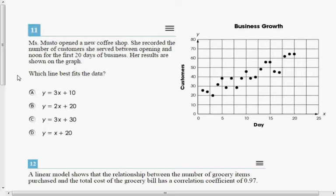Okay, number 11 says Ms. Musto opened a new coffee shop. She recorded the number of customers she served between opening and noon for the first 20 days of business. Her results are shown on the graph.